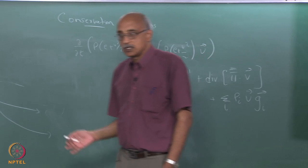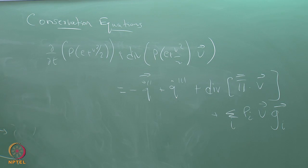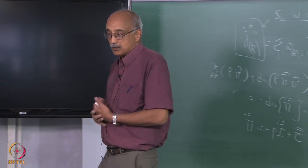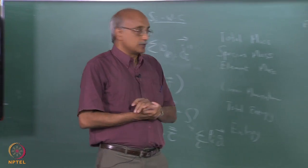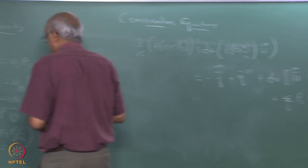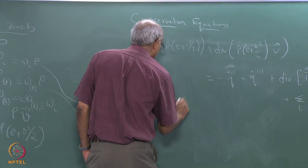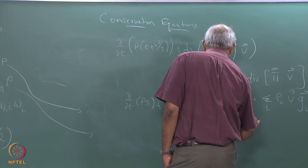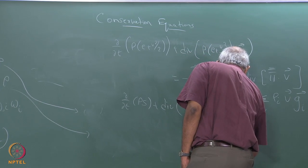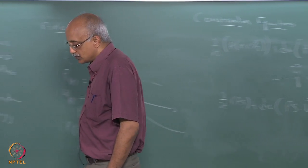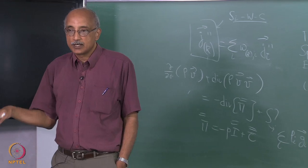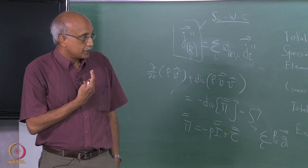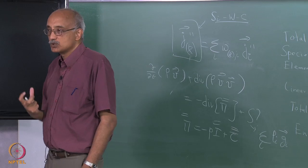For entropy conservation: del/del_t of (rho s) plus divergence of (rho s V) equals minus J_s'' plus S''', where J_s'' is the diffusive entropy flux associated with both mass flux and energy flux, and S''' is the entropy source term which includes all volumetric contributions to increase in entropy of the system.